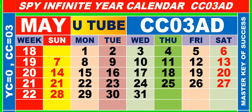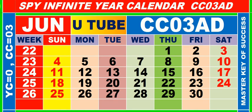Calendar for the month of May, having calendar code equal to 03. Calendar for the month of June, having calendar code equal to 03.